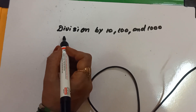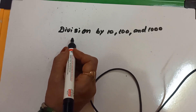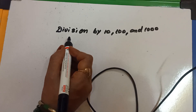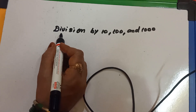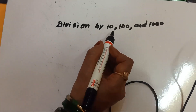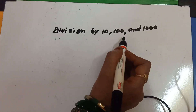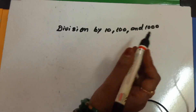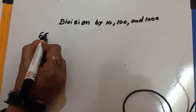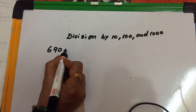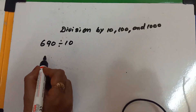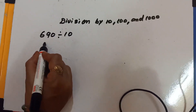I have already started the division chapter. Today I am going to start a new topic — it is division by ten, hundred, and thousand. Suppose I am taking the number 690 divided by 10, so how can we divide?